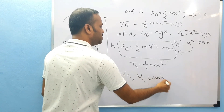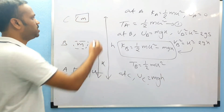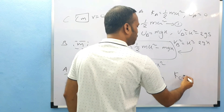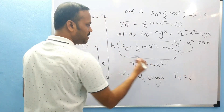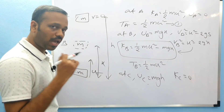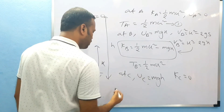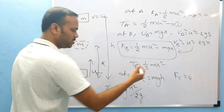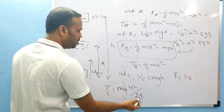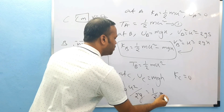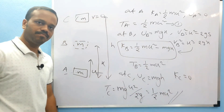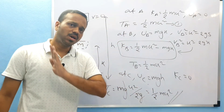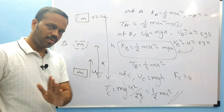At point C, UC equals mgh. The velocity is zero since it is the maximum point, so KC equals zero. The formula for maximum height in vertical projection is h equals u squared by 2g. Substituting, total energy at C equals mg times u squared by 2g, and gg cancels to give half mu squared. So TA equals half mu squared, TB equals half mu squared, TC equals half mu squared.